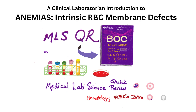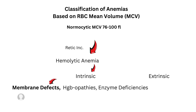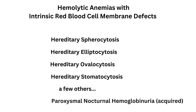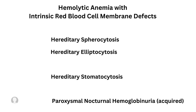Hello, welcome back to MLSQR — a quick review of anemias and intrinsic red blood cell membrane defects from the point of view of a clinical laboratorian. Anemias with membrane defects are hemolytic anemias that are intrinsic with a high reticulocyte count and they are normocytic and normochromic. We will focus on hereditary spherocytosis, leptocytosis, stomatocytosis, and paroxysmal nocturnal hemoglobinuria, which is an acquired hemolytic anemia.